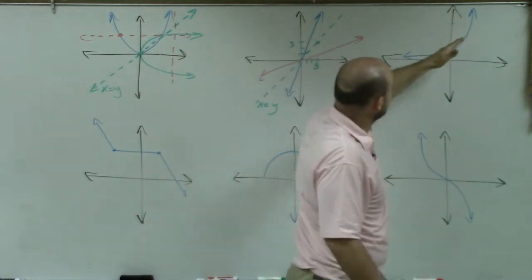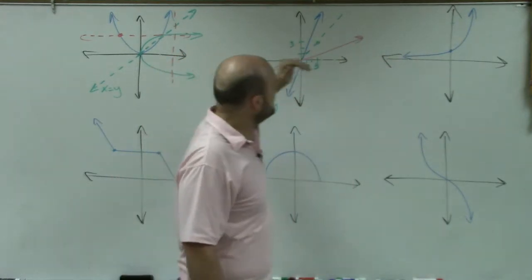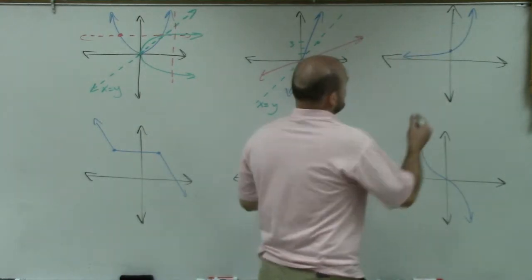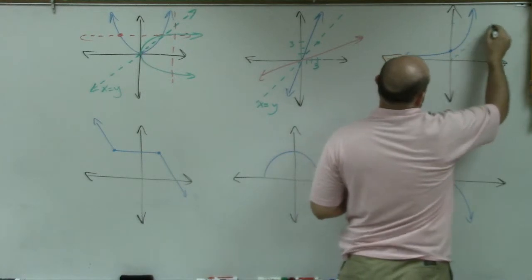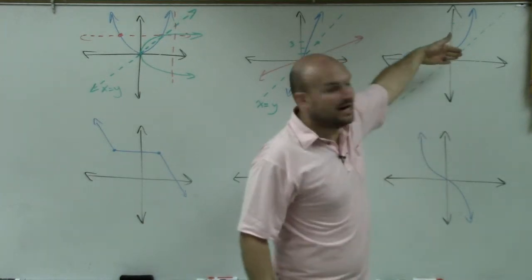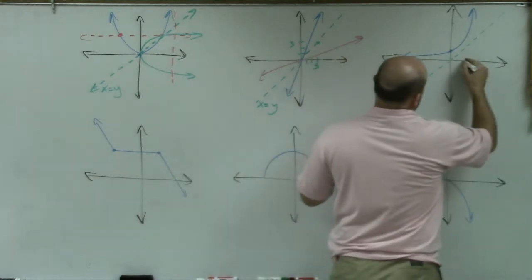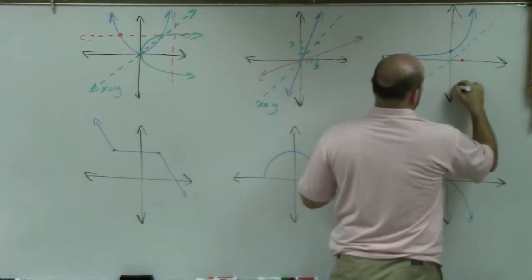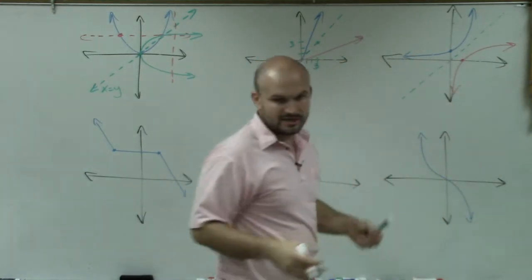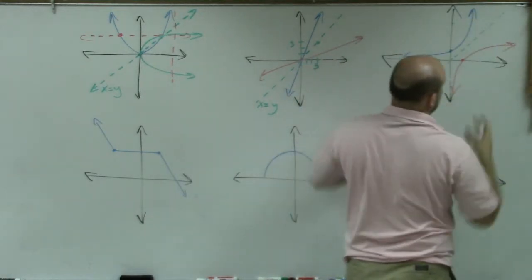Everything else passes the horizontal line test, so I draw the vertical line. I did show that the graph went up one point, so when reflected over, the new one goes over and down exactly one point — it looks something like that. The best way to think about reflections is taking a sheet of paper and flipping it over, so you can see exactly what the graph would look like.